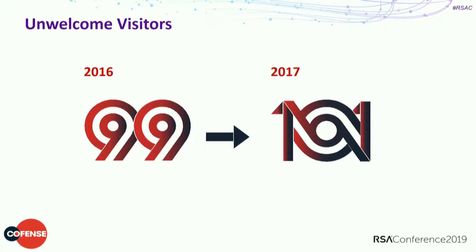So, dwell time. We define dwell time as how long a threat actor has been in our environment before we noticed they were there. The 2018 FireEye Mandiant M-Trends Report showed dwell time went up from 99 to 101 days. While the number went up a little, there was an interesting surprise: more organizations were actually finding threats in their own environment before a three-letter agency came knocking on their door. We're getting better at finding threats ourselves before someone has to tell us the danger is there.